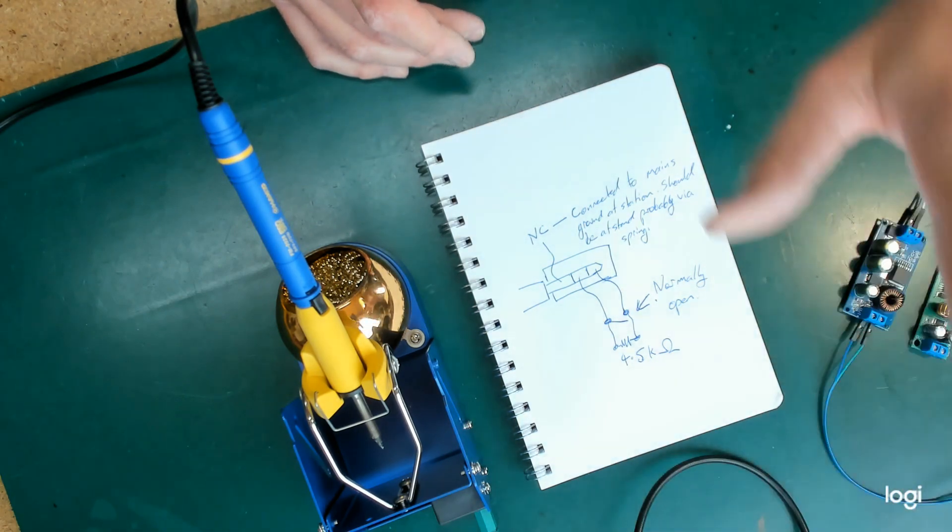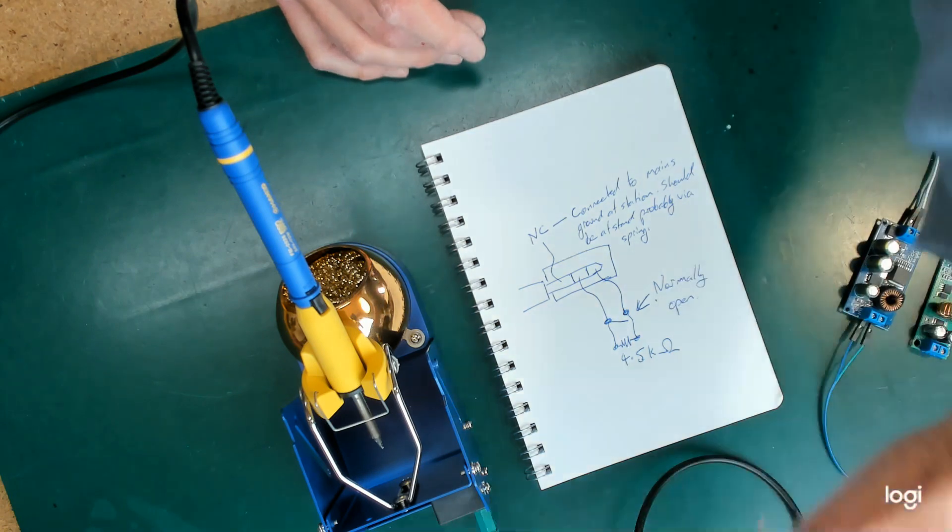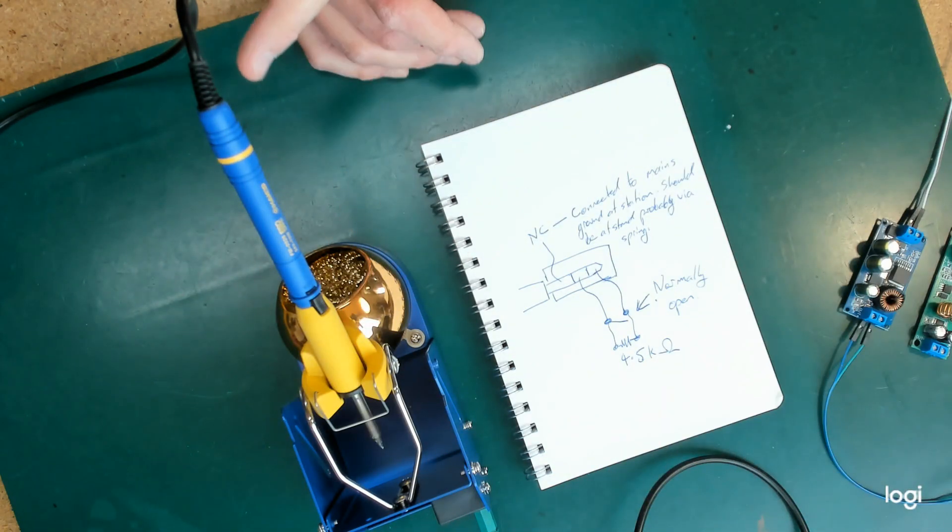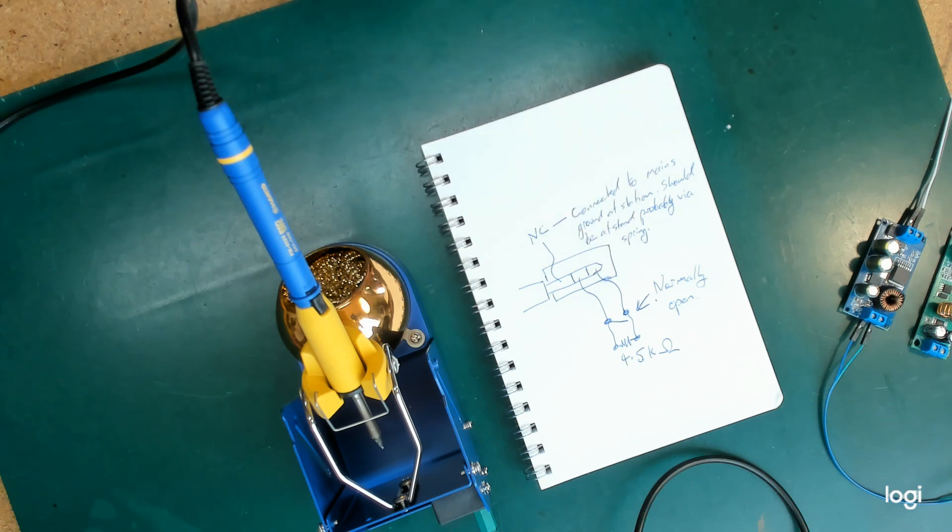I have to say, having the 950, the limited amount I've used it, this lovely Hakko soldering pencil and a genuine tip is a joy to use. It is by far the nicest soldering iron I've ever had. I'm very, very happy with it indeed.